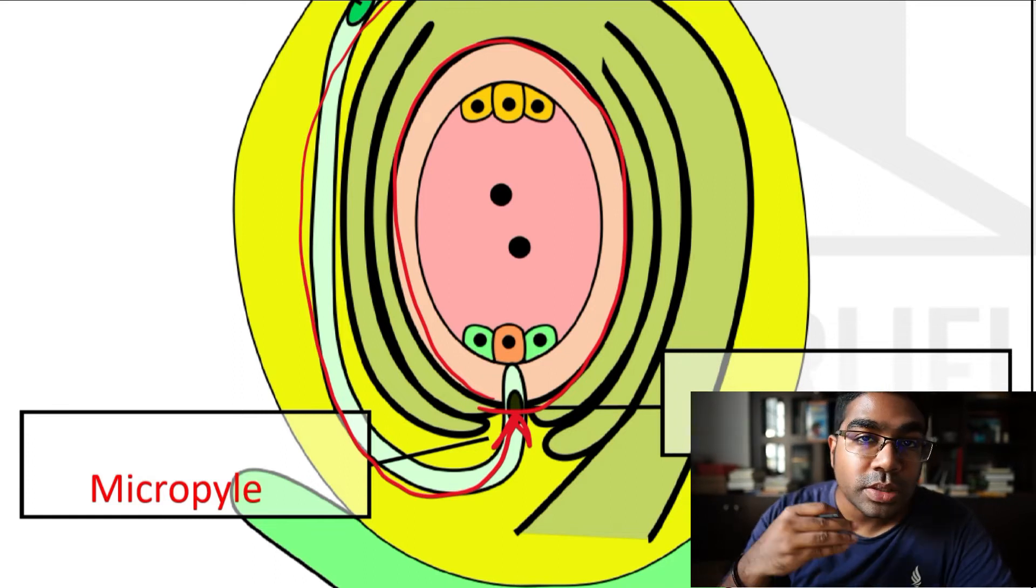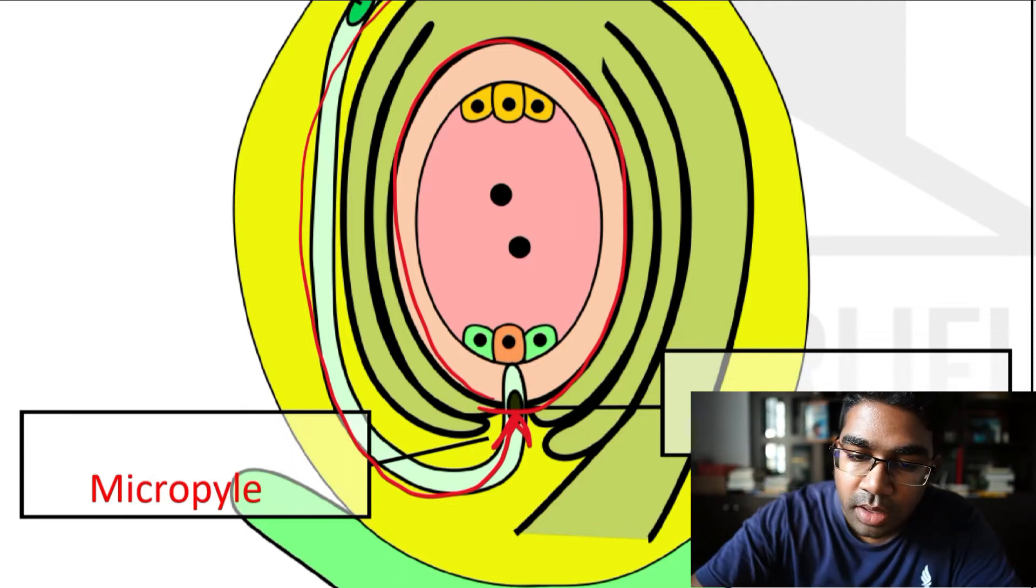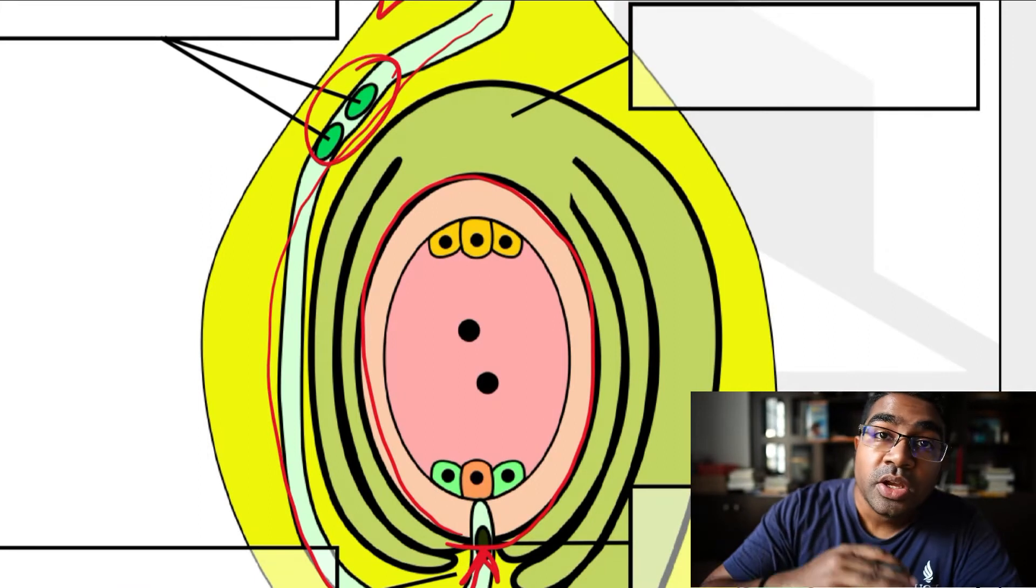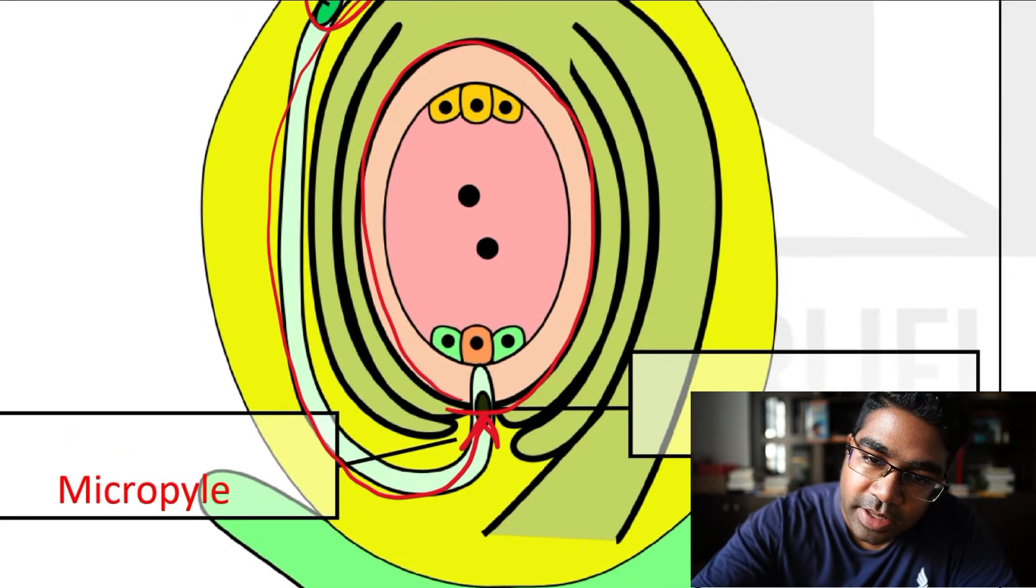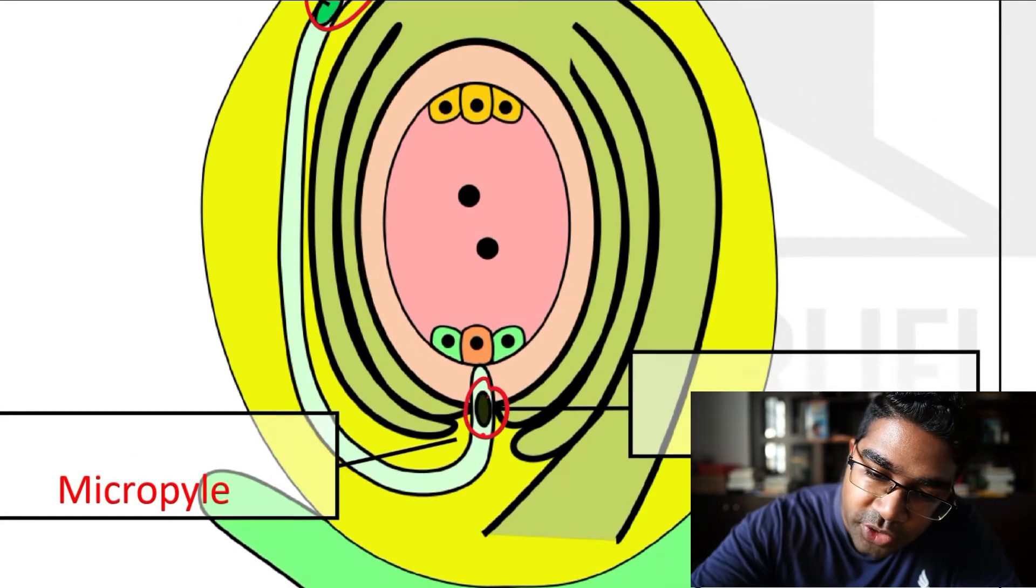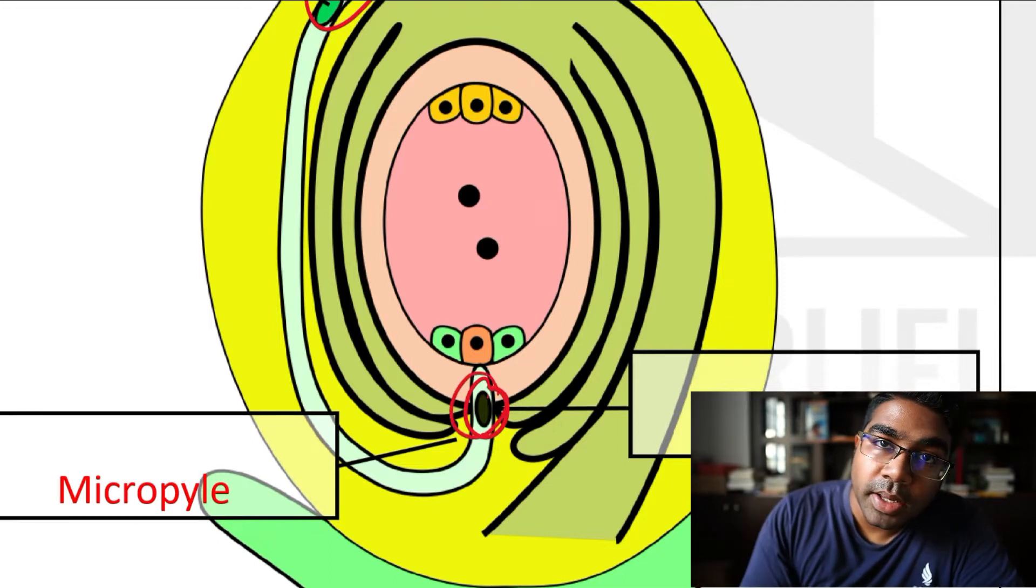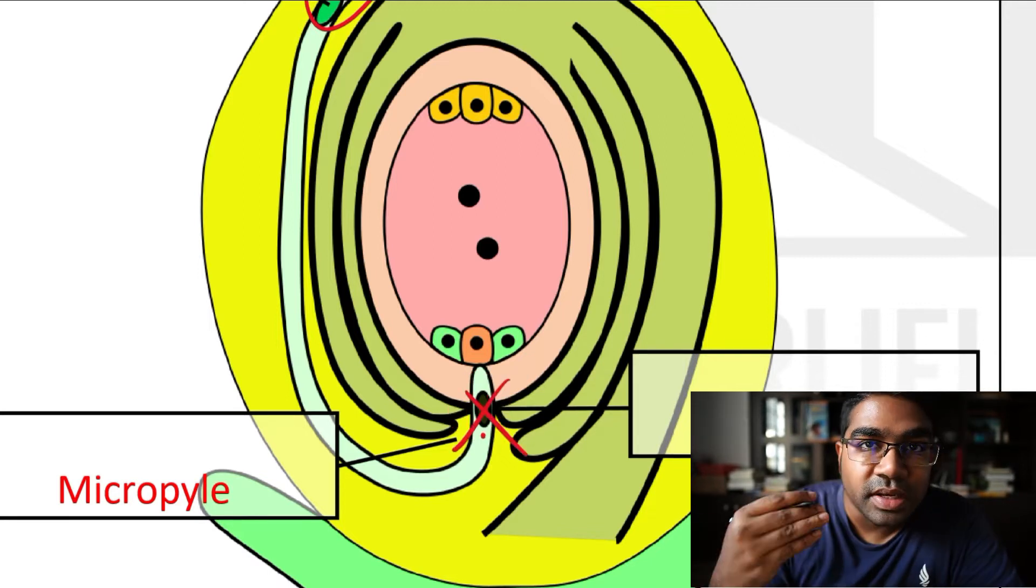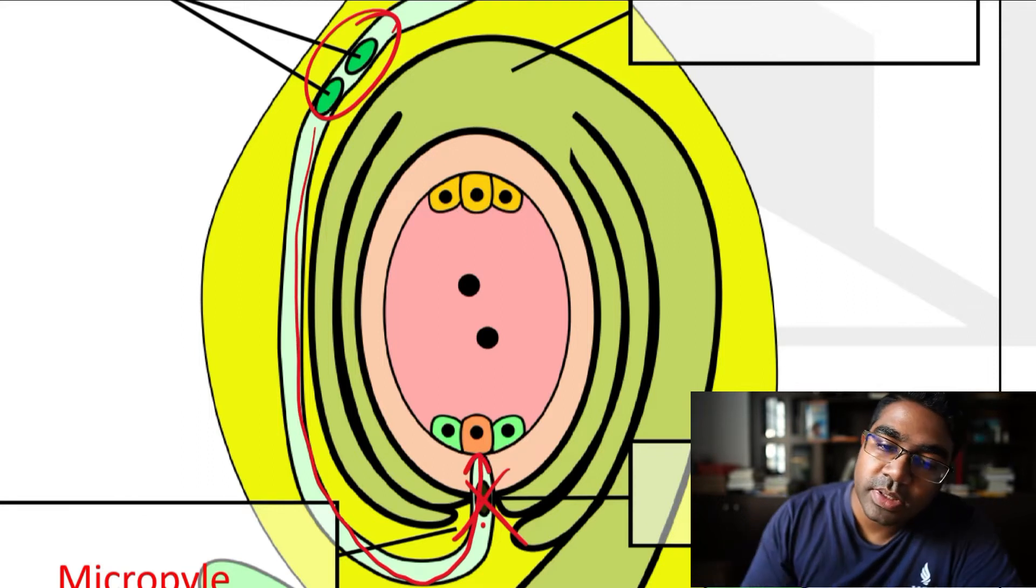Once again, if you haven't watched the development of the embryo sac and the pollen grain, I have a video on that. I'll leave a link in the description. And so the whole goal of this is to get the male gametes to fertilize the egg cell. So the egg cell lies in the embryo sac. And once the tube nucleus has done its job, it's already created the pollen tube right until it penetrates the micropyle, then the tube nucleus will degenerate. It no longer serves any purpose.